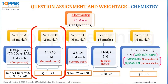In Section B, 2 marks are allotted to chemistry. There will be 2 chemistry questions out of which you need to answer any one. Question number 21 will be the chemistry question of 2 marks with internal choice.